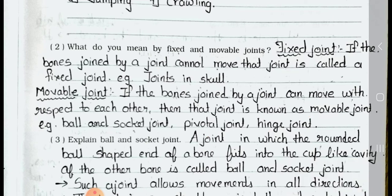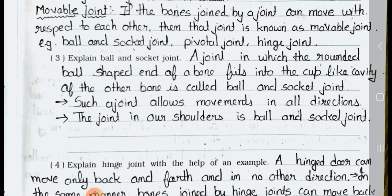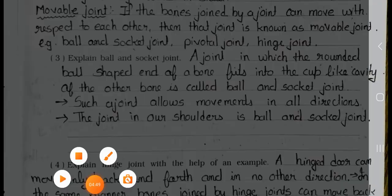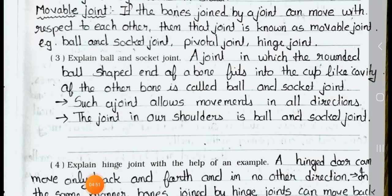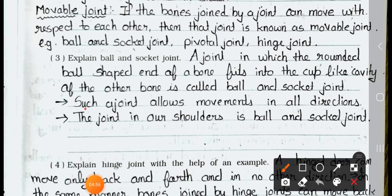Question 3: Ball and socket joint. A joint in which the rounded ball-shaped end of a bone fits into a cup-like cavity of the other bone is called a ball and socket joint. Such a joint allows movements in all directions. The joint in our shoulders is a ball and socket joint.